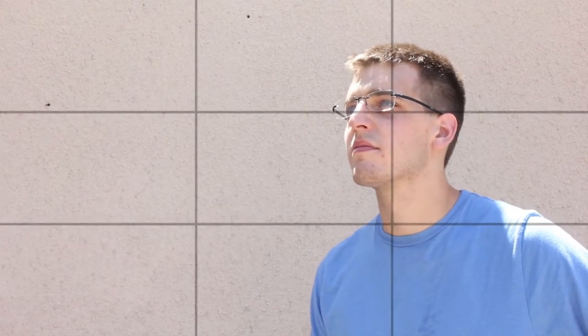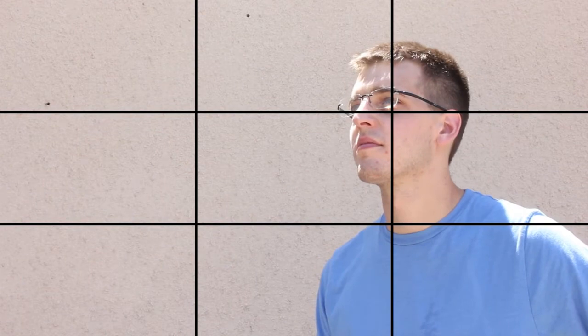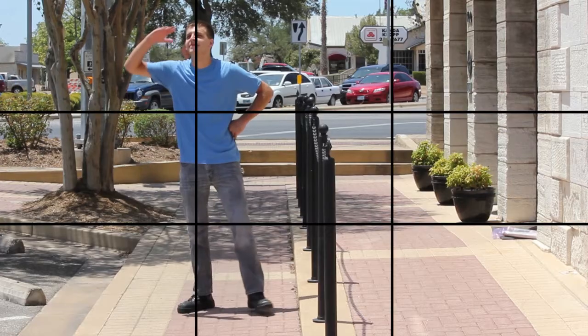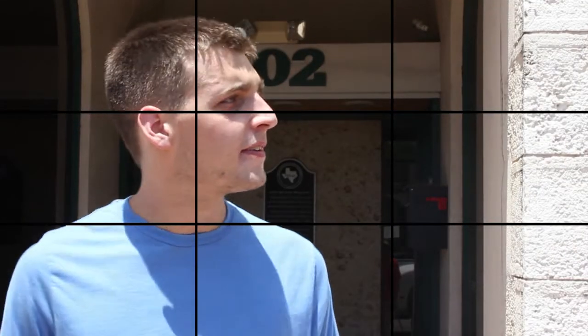When a subject is in the center of the shot, it comes out boring. Following the rule of thirds, though, you can place the subject on a grid line giving him space to look. The rule of thirds was applied as a guide during the composure of these frames.